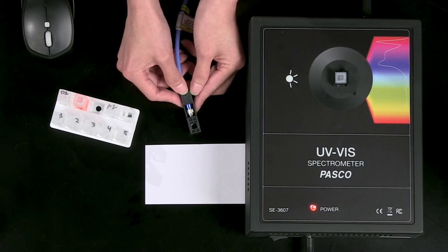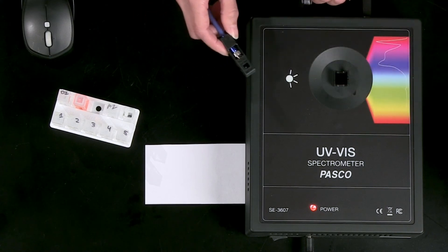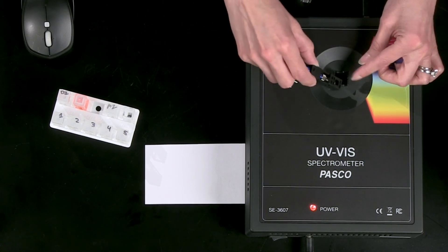To properly position the fiber optic cable, find the triangle on the cuvette housing and line it up with the notch on the cuvette holder on the spectrometer.